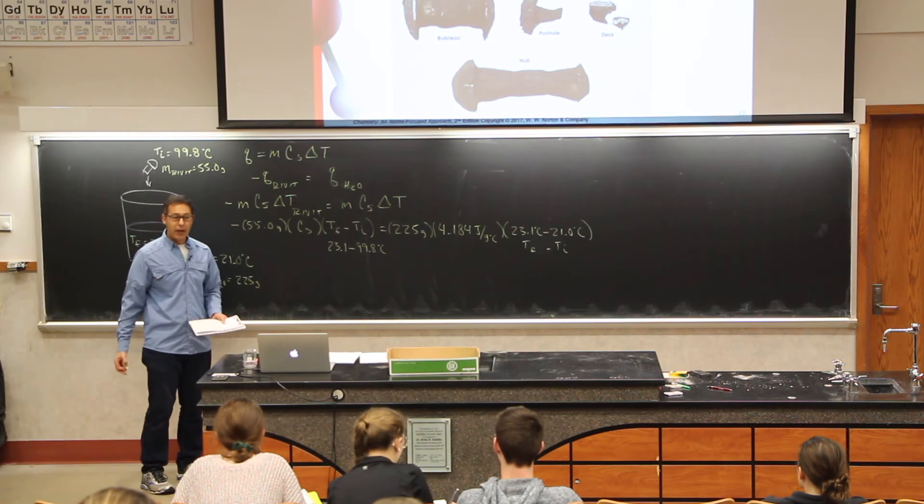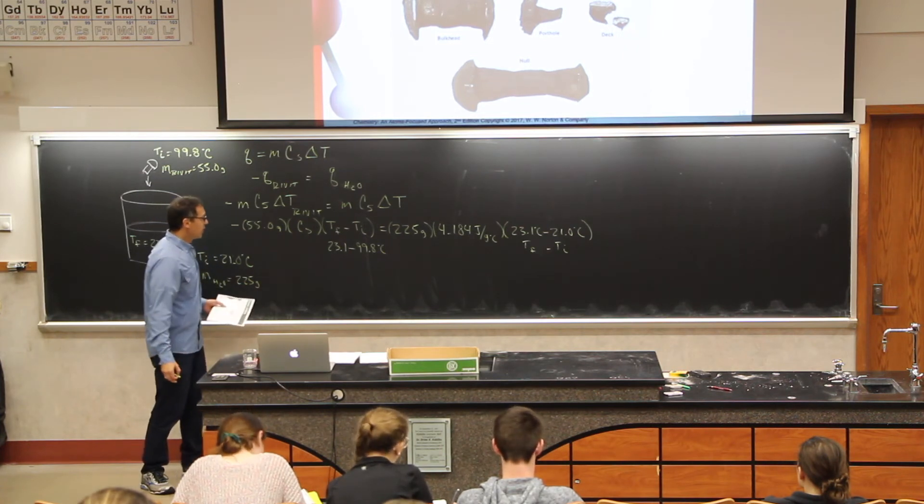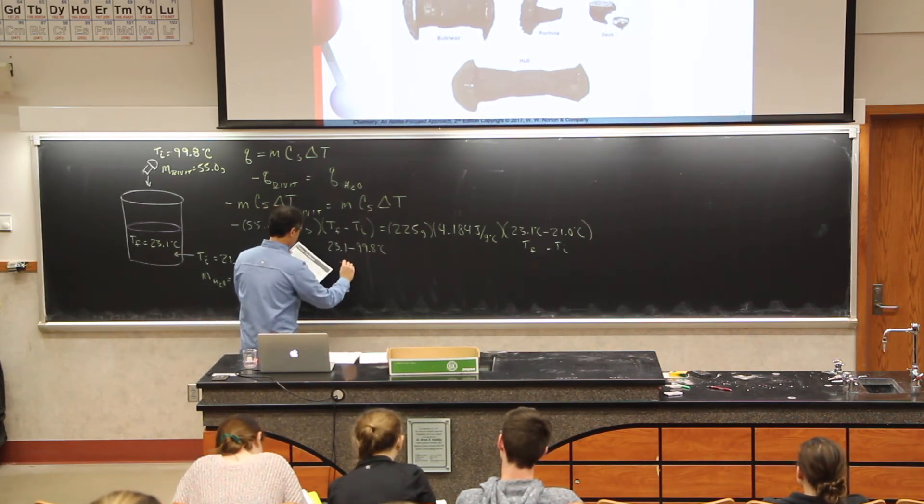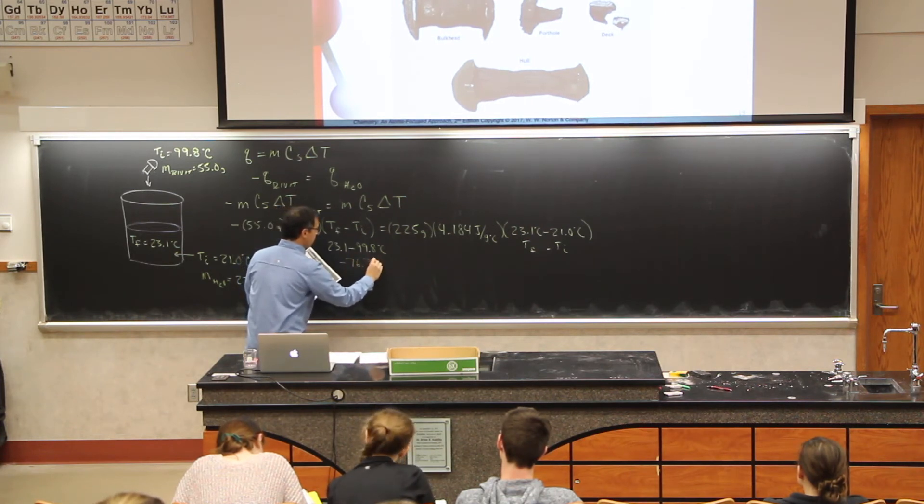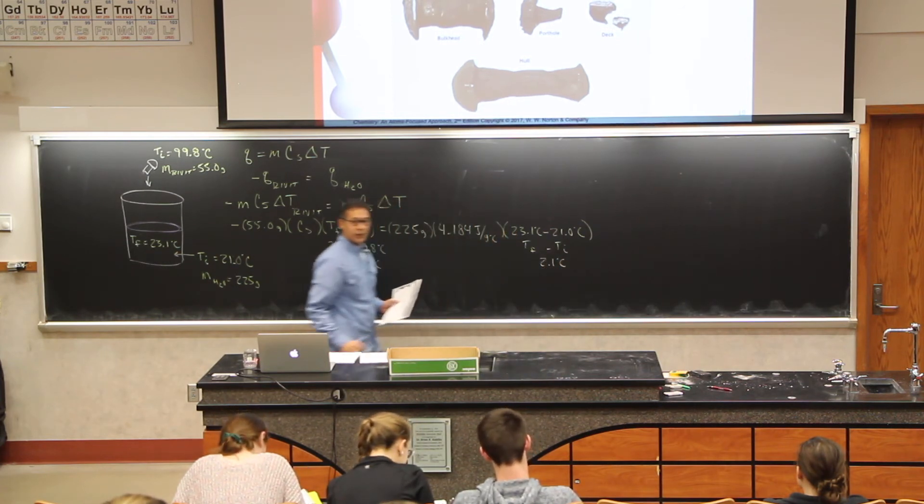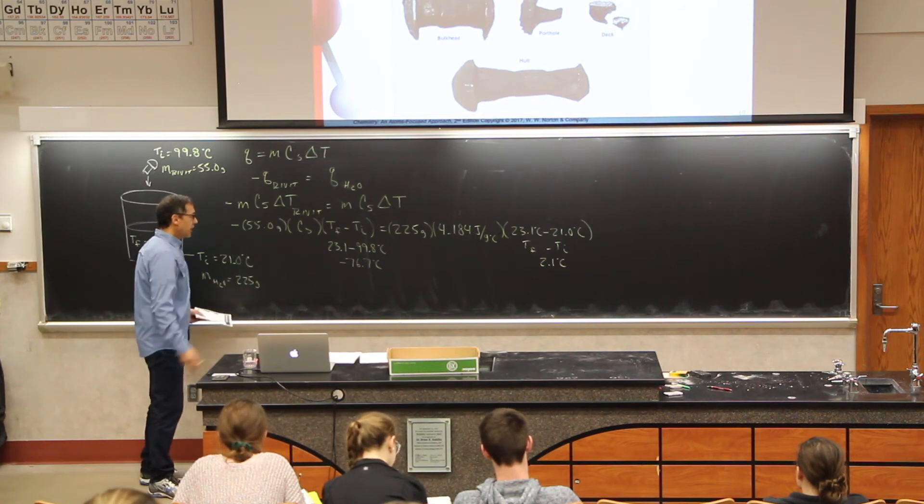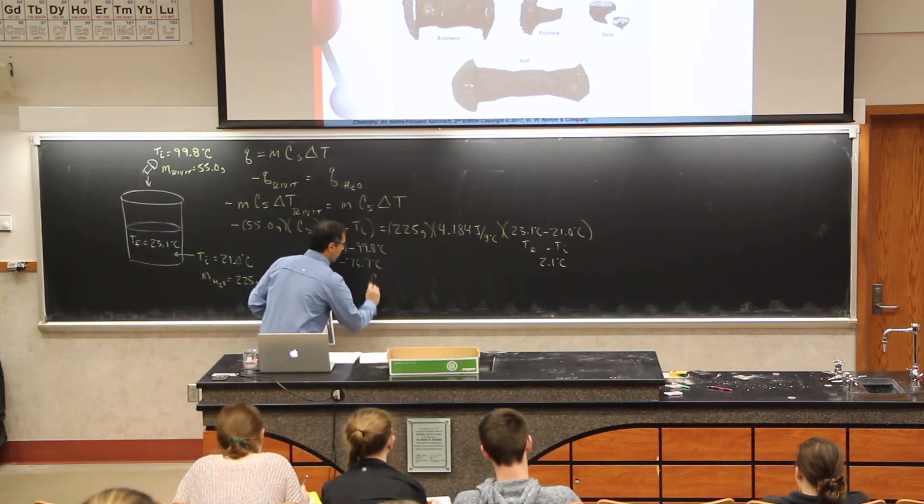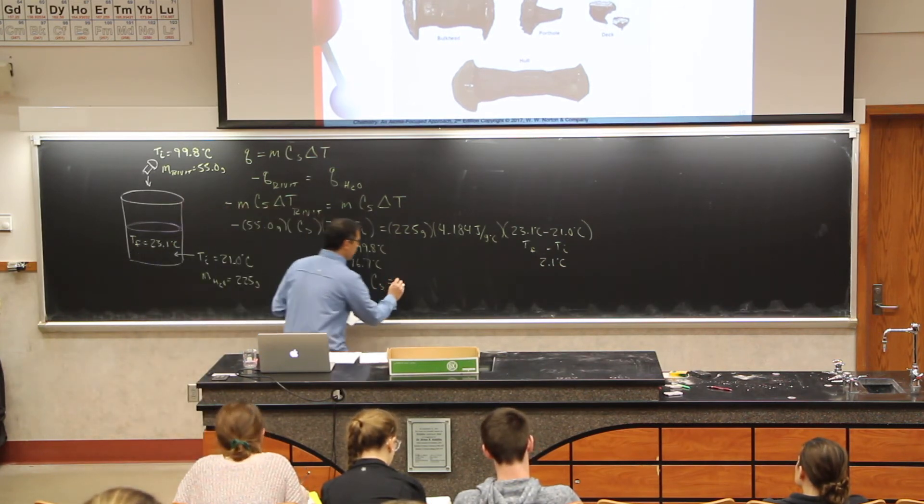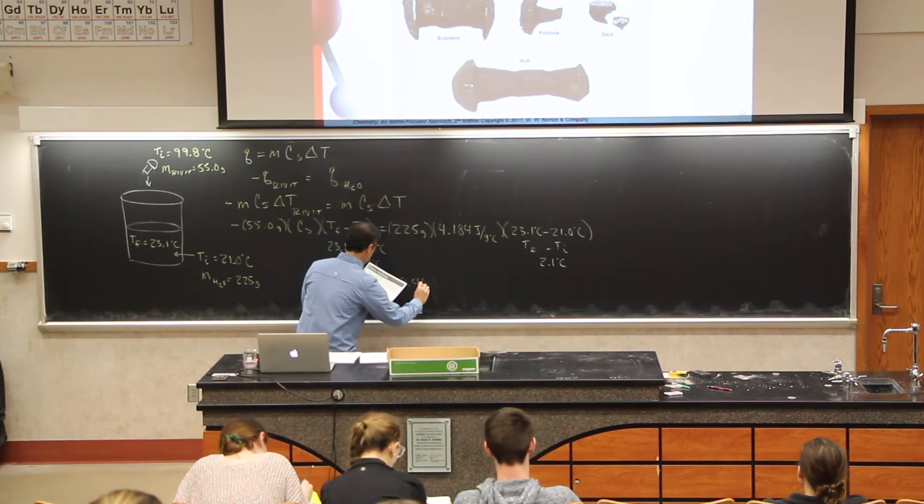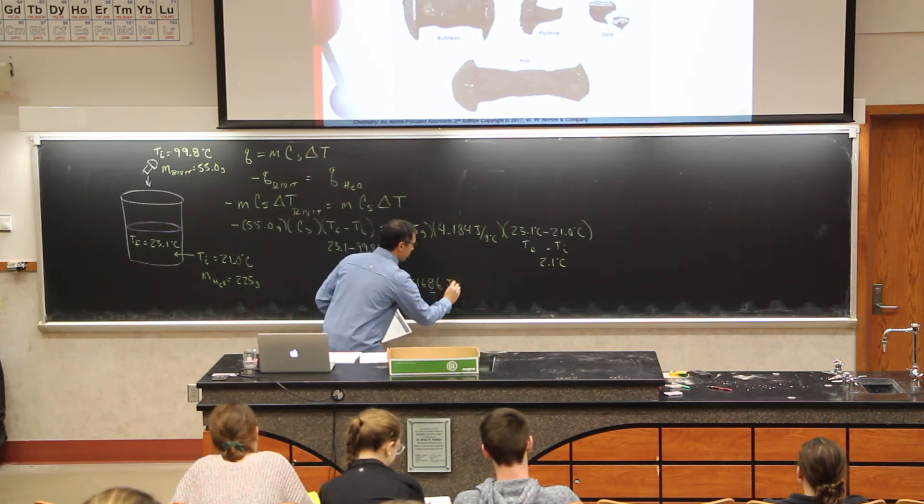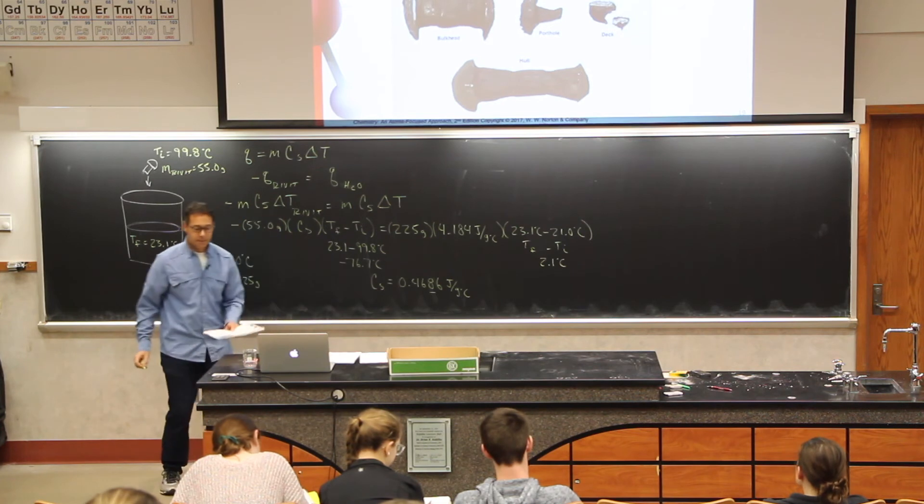And so now we just need to do some math. And to make our lives a little easier, what I like to do is in these brackets here with the temperature, I just like to do the math on that. And so that comes out to a negative 76.7 degrees Celsius. And over here I'm going to have 2.1 degrees Celsius. And when it's all said and done, we end up with a specific heat here. Our specific heat comes out to 0.4686, and that should be joules per gram degree Celsius.